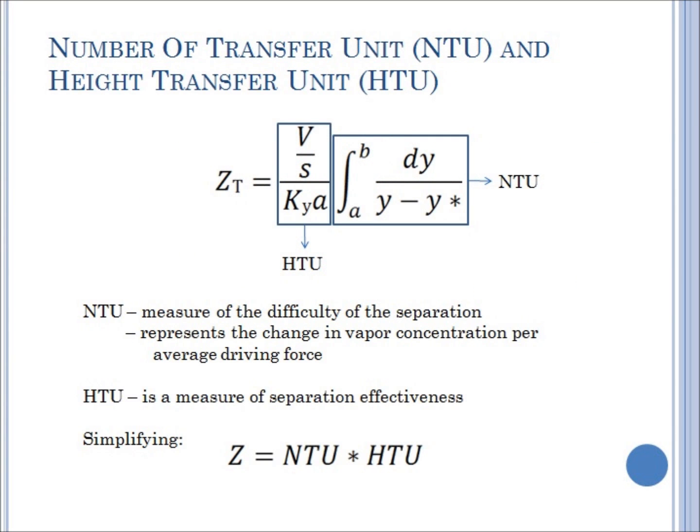I will first discuss how to compute Z using the number of transfer units and the height of transfer units. Based on the equation, ZT is equal to V over S over KYA, times the integral of dY over Y minus Y prime from A to B, where V over S is the volumetric flow rate, KY is the overall gas phase mass transfer, and A is the packing parameter.